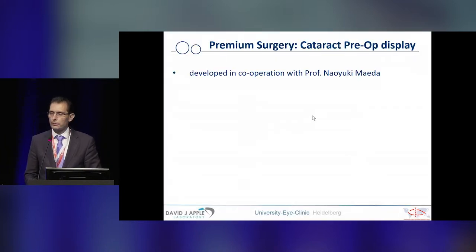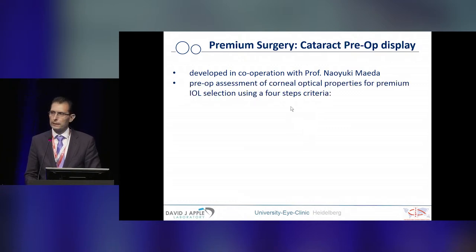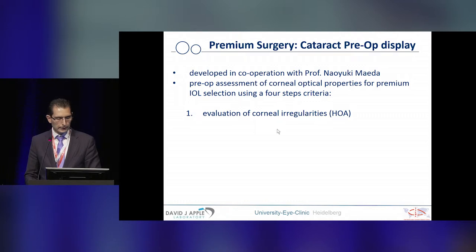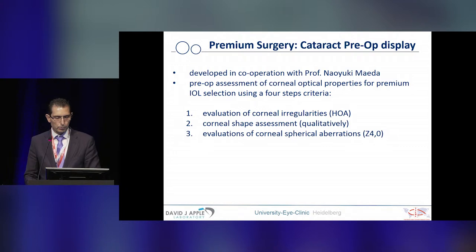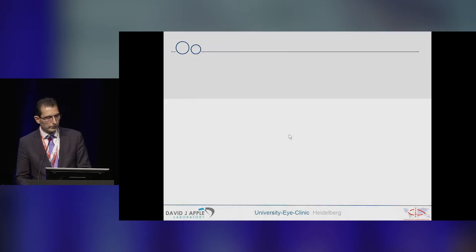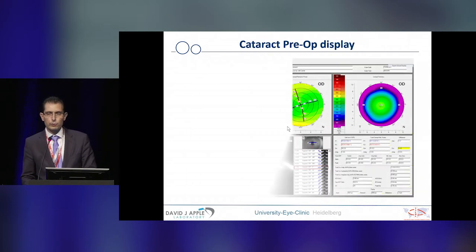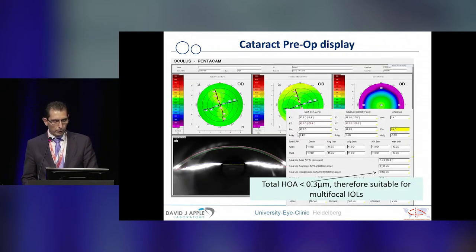Together with Professor Mehta, in order to screen patients with respect to their needs and expectations regarding which type of lenses we can use in cataract surgery, we have this preoperative assessment tool. It is very helpful to evaluate corneal irregularities by addressing higher-order aberrations, corneal shape assessment qualitatively, and spherical aberrations — whether an asphericity-correcting lens is suitable or not. This has been published a few years ago and I will go through the slides with you in the next five minutes.